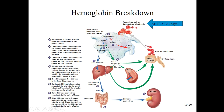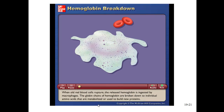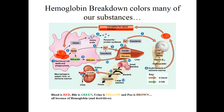In normal conditions, bilirubin is conjugated and then passes out through the bile and into the intestines, giving bile its green color. It's then converted into bilirubin derivatives like urobilinogen, which gives urine its yellow color and stool its brown color. So: blood is red, bile is green, urine is yellow, and poo is brown — all because of hemoglobin and its derivatives.